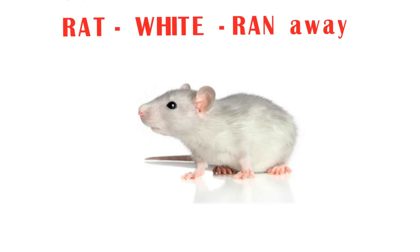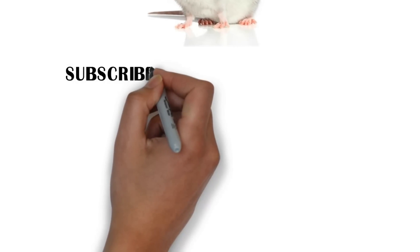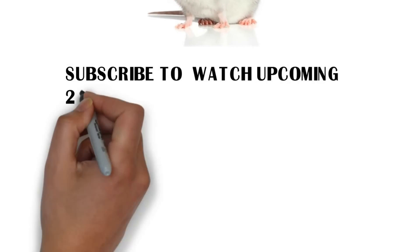In this sentence, RAT stands for Gujarat, WHITE stands for White Desert, and RAN stands for Rann of Kutch. Try to remember the image of a rat so that you can easily recall all three words: RAT, WHITE, and RAN.